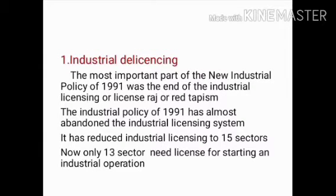The first feature is industrial de-licensing. The most important part of the New Industrial Policy of 1991 was the end of the industrial licensing system, also known as License Raj. The industrial policy of 1991 has almost abandoned the industrial licensing system. It reduced industrial licensing to 15 sectors, and now only 13 sectors need a license for starting an industrial operation.